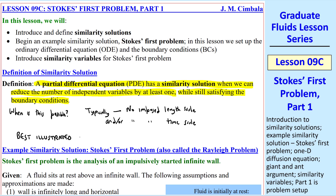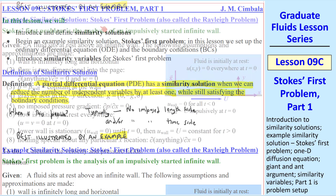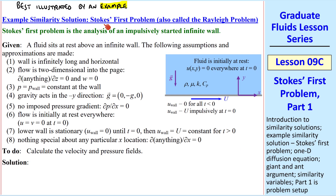This is best illustrated by an example. Our example is called Stokes' First Problem, which is also called the Rayleigh Problem. It's the analysis of an impulsively started infinite wall. We have a wall that's originally at rest, but at time equals zero, the wall suddenly moves at speed capital U.